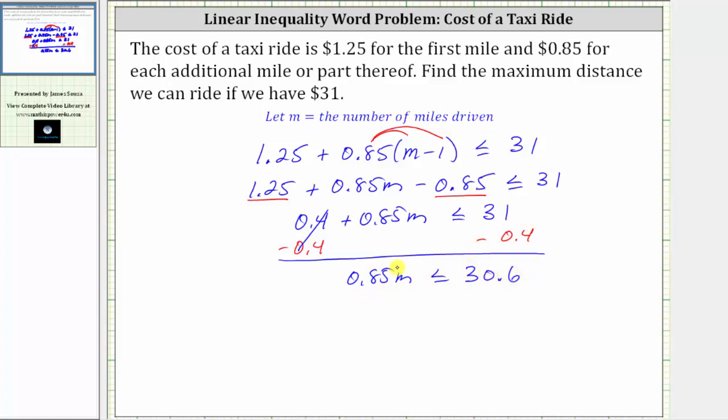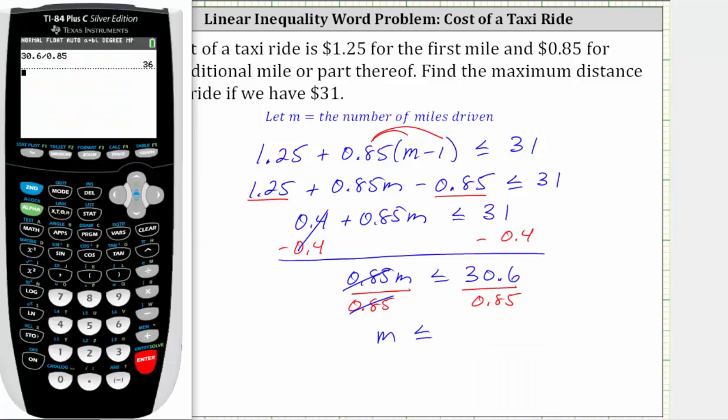The last step to solve for m is to divide both sides by 0.85. Simplifying on the left, 0.85 divided by itself simplifies to 1. 1 times m is m. We have m is less than or equal to 30.6 divided by 0.85, which is equal to 36.